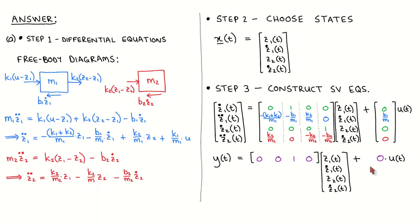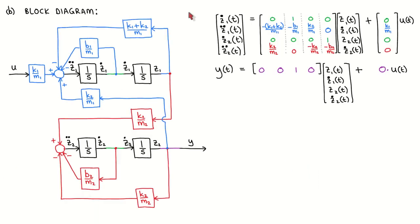We have now constructed the state variable equations with matrix A, vector B, vector C, and scalar D. The second part of the problem is to draw the block diagram of the model. I have copied the state variable equations from the previous page over here. For the block diagram, I started by drawing the parts shown in black. There are four states, so there must be four integrators. I labelled the outputs of the integrators as the states, and the inputs of the integrators are therefore the derivatives of the states. I also drew in and labelled the input U as well as the output Y. I then went line by line through the state variable equation and the output equation and drew in the rest of the block diagram.